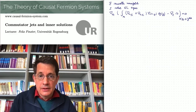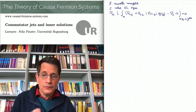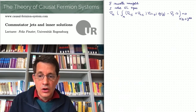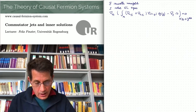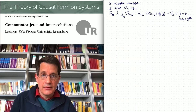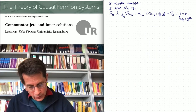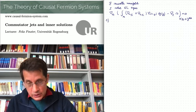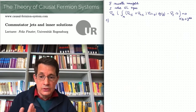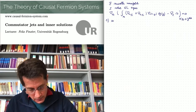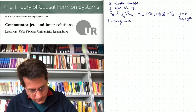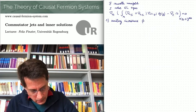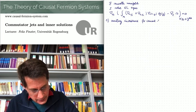Now let us construct the solutions of the linearized field equations. As I said at the beginning, these solutions correspond to certain invariances of the setup. One invariance is unitary invariance, but of course this works only for causal fermion systems — not for causal variational principles in general, because then it's not clear what the unitary group should be. So let me write here: unitary invariance for causal fermion systems.